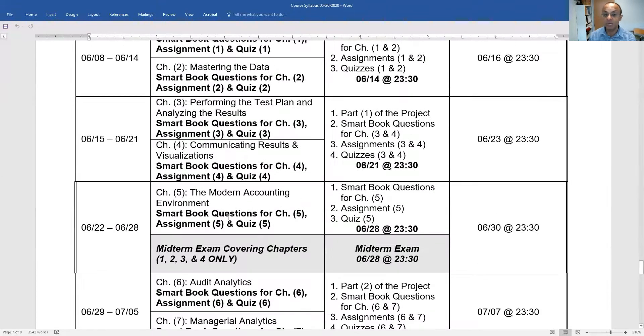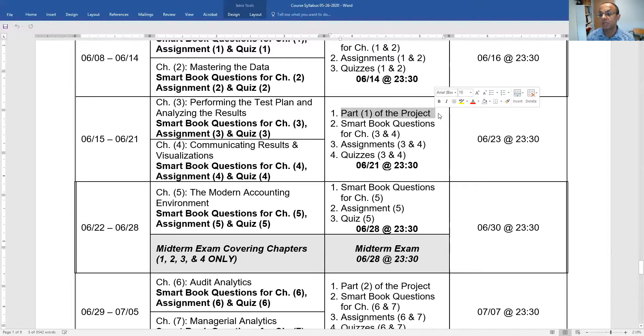The following week will take chapter three and four and you do the same. The smart book questions, the assignments, the quizzes will be due by June 21st. And by that date, you need to submit part one from the project. So the project has three parts. The first part will be due by June 21st. And I uploaded the course project on Moodle and I'm going to explain the details of the course project on Moodle as well.